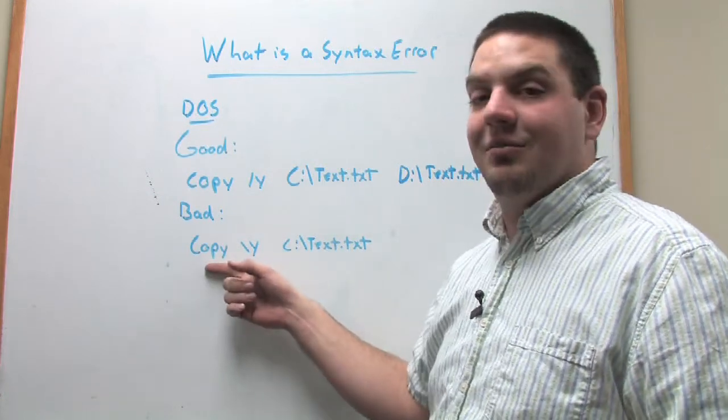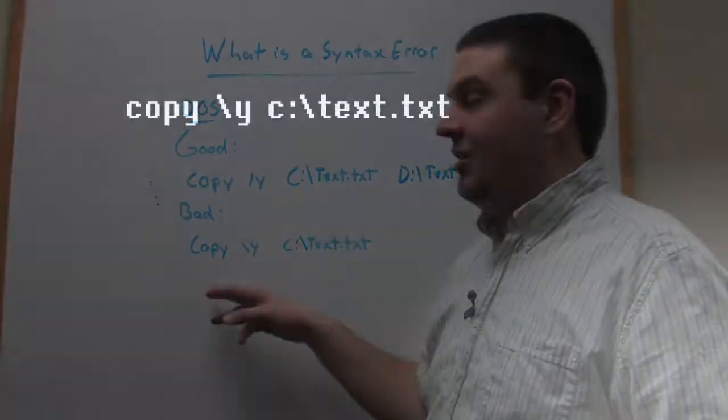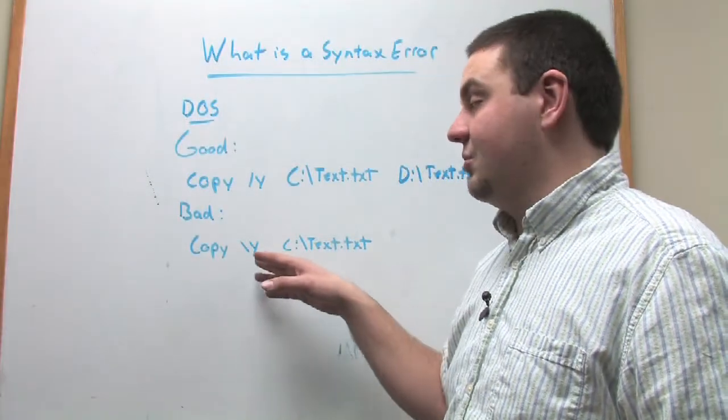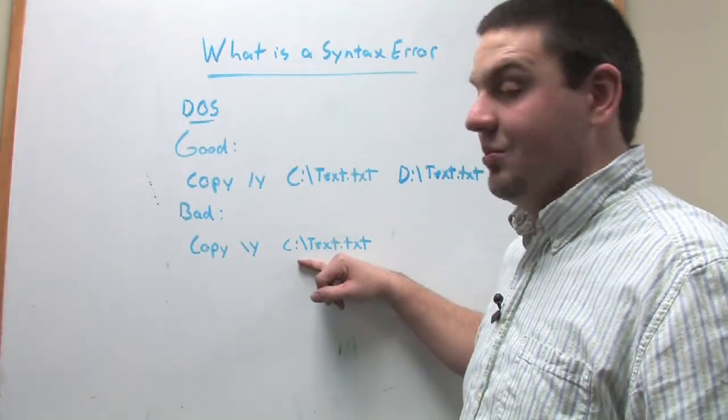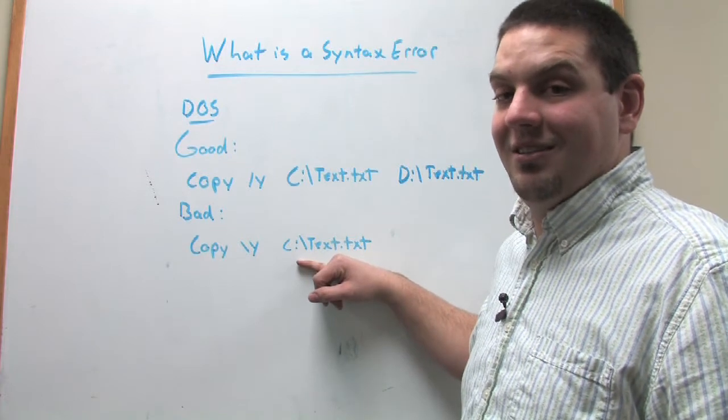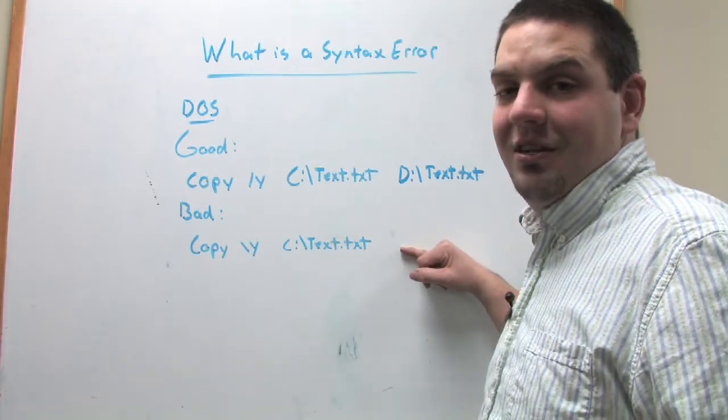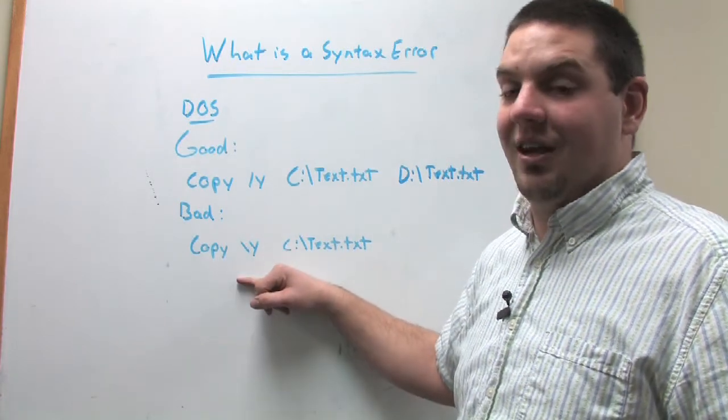This is a bad example of syntax. When you're using copy backslash y, with any switches within DOS, the correct syntax is a forward slash and then whatever switch you're using. And then you have a source which is c colon backslash text dot txt which is fine except you don't have a destination. So this is an example of bad syntax.